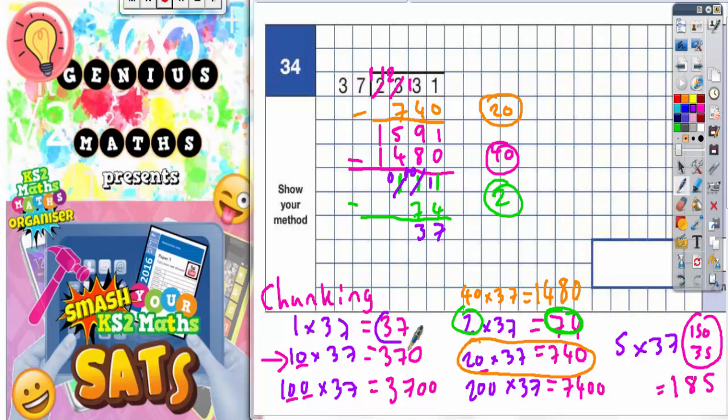Now it should be easy because 37 is just 1 lot of 37. If we take 37 off now, which is just a chunk of 1 times 37, it's obvious what's going to happen: 37 take 37 is 0.